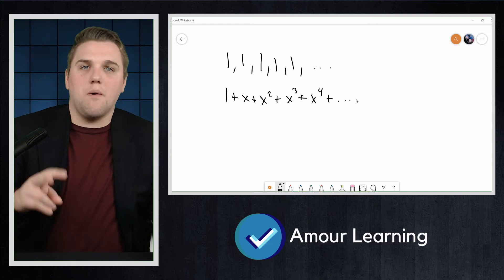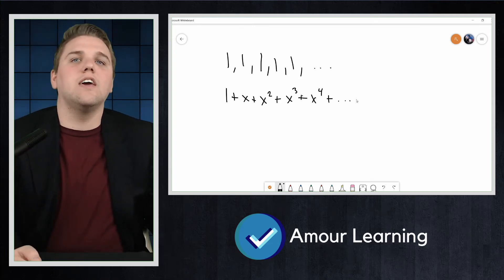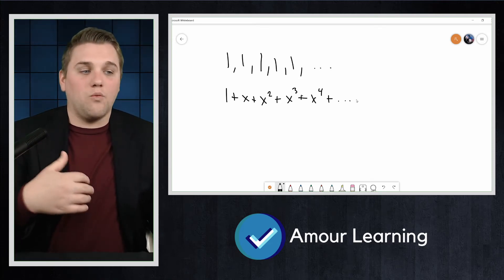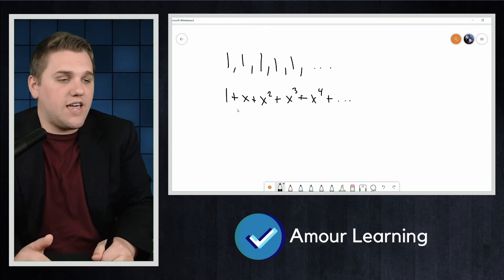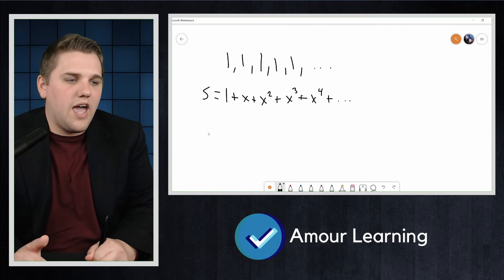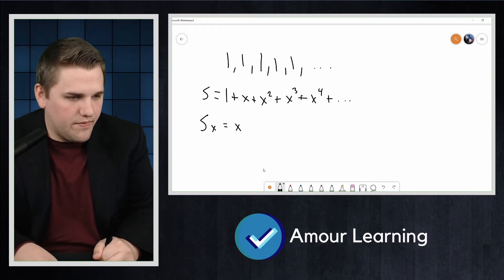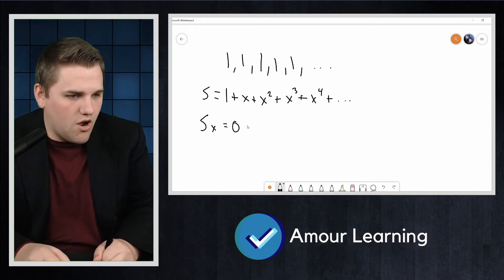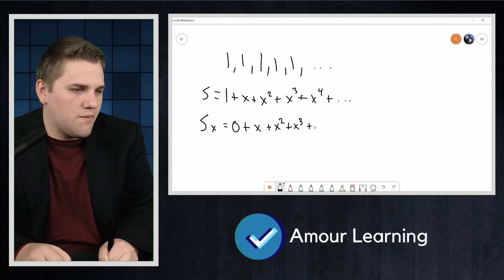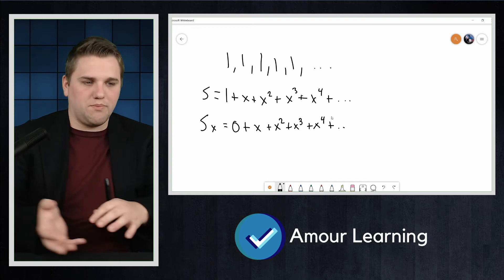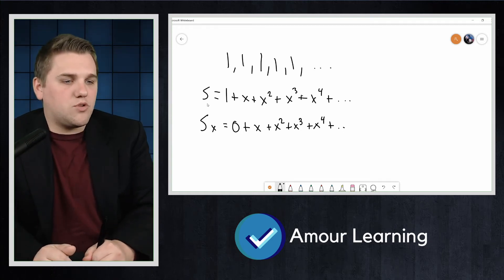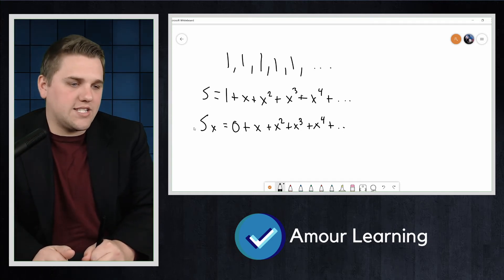So if we use our multiply, shift, and subtract technique we learned in a previous video, we can see that if we have s equals this and we look at s times x, that's just x—well actually, let me write it this way: 0 + x + x^2 + x^3 + x^4 and so on. That's because we're multiplying and shifting.